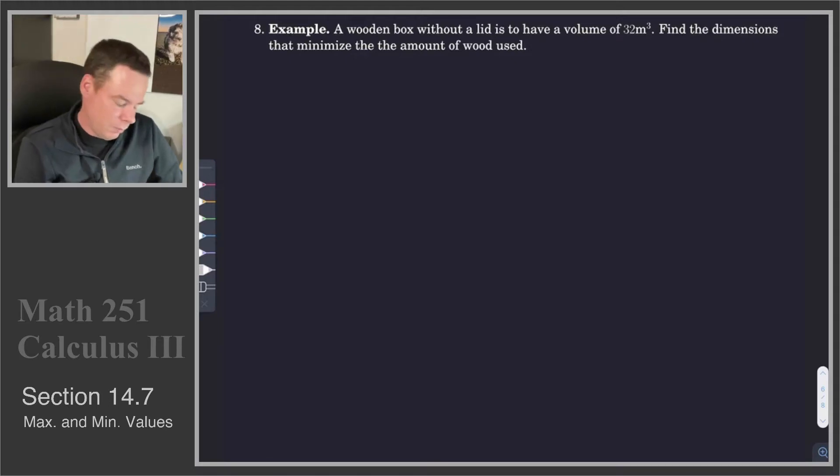Let's have another look at a problem involving finding the maximum or minimum value of a function. We've got a wooden box without a lid and it's to have a volume of 32 cubic meters. We want to find the dimensions that minimize the amount of wood used, which would be surface area. So we want to have a box of fixed volume with minimum surface area.